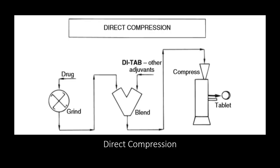Direct compression is only suitable for drugs which have properties that allow them to be directly compressed without forming granules. An example is potassium chloride. The drug is ground, then you add your excipients, blend and directly compress. You don't need to granulate because the property of the drug allows it to self-adhere.